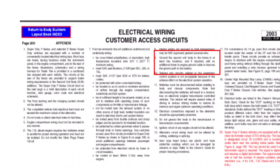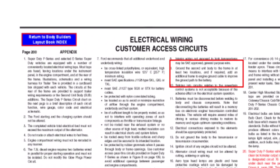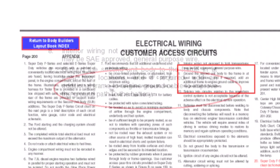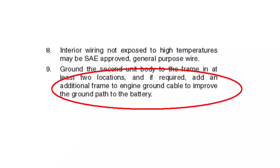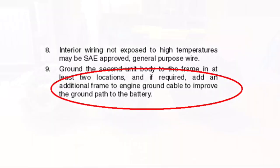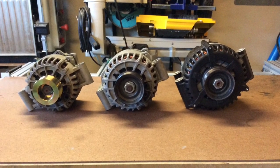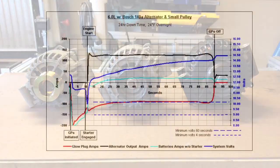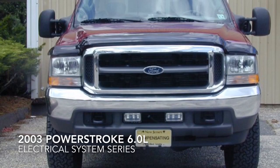From the 2003 Ford Bodybuilders Handbook for Companies Adding High Current Electrical Equipment. If required, add an additional frame-to-engine ground cable to improve the ground path to the battery. I'm working on at least two more videos, one comparing different alternators that I've had on my truck and about FICM and PCM grounding. Thanks for viewing.